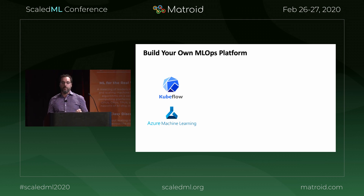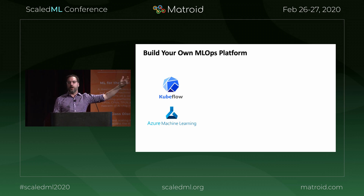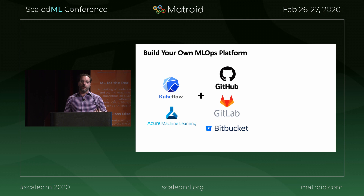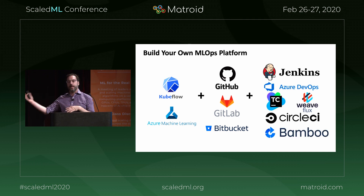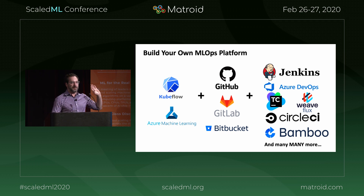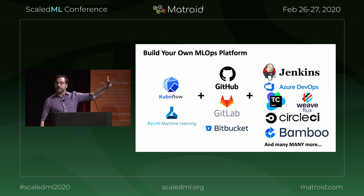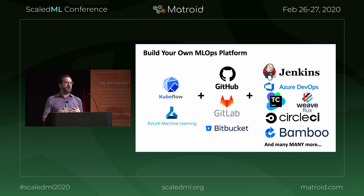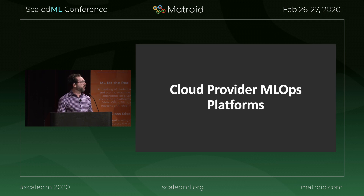The way we recommend doing it is: take your ML platform — whatever it might be, Kubeflow, Azure Machine Learning, it doesn't matter — layer Git on top of that, then layer your CI/CD system on top of that. There are a lot of CI/CD systems out there. If you're thinking of a startup project, I'd recommend not building a CI/CD system — we have lots. Make the existing ones better. Layer all these things together and drive everything declaratively through Git.